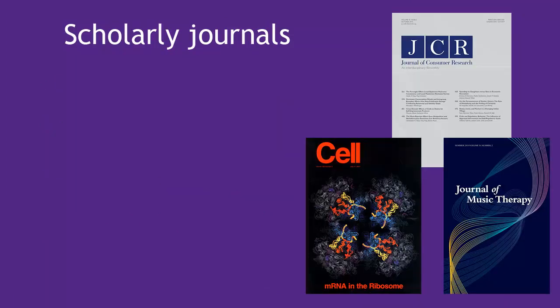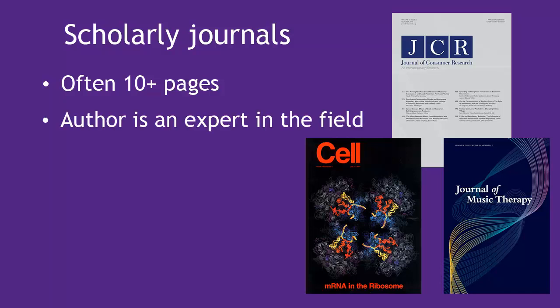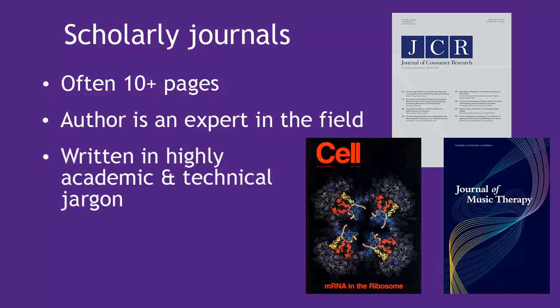Scholarly journals, sometimes called academic journals or peer-reviewed journals, don't look like magazines at all. Articles are often long, usually more than ten pages, and are written by experts, such as a professor, in a field. The language of the article is usually highly academic and contains technical jargon related to the subject matter. Examples of scholarly journals are The Journal of Music Therapy, Cell, and The Journal of Consumer Research.